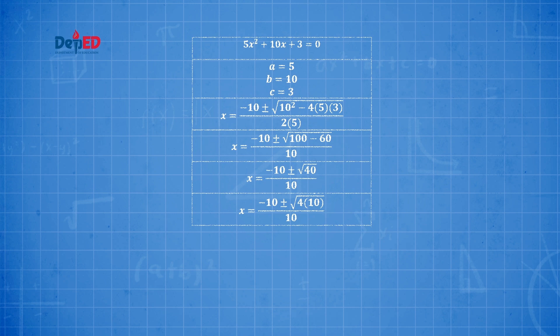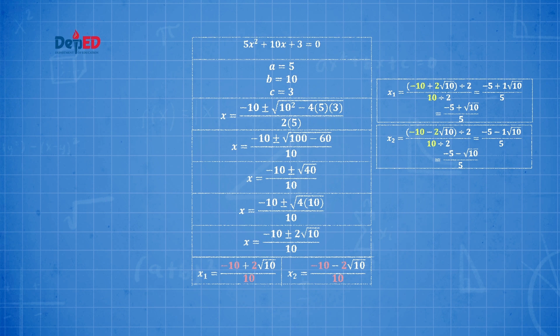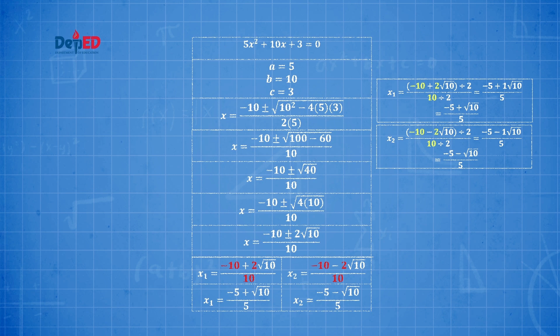So we express 40 as 4 × 10, take out √4 = 2, and retain 10 under the radical sign. We split the equation into two: x₁ = (−10 + 2√10) / 10 and x₂ = (−10 − 2√10) / 10. Solving for x, since −10, 2, and 10 are all divisible by 2, we simplify: x₁ = (−5 + √10) / 5 and x₂ = (−5 − √10) / 5.